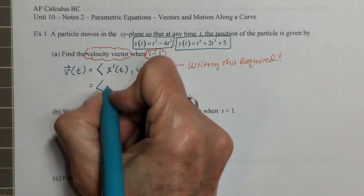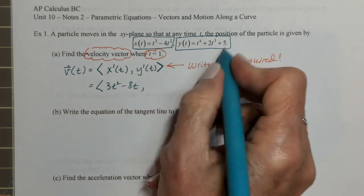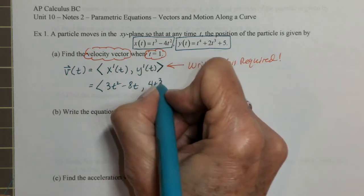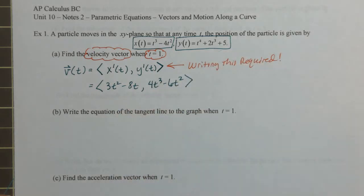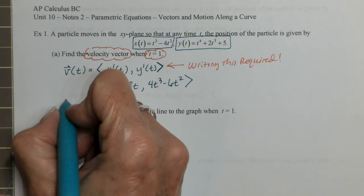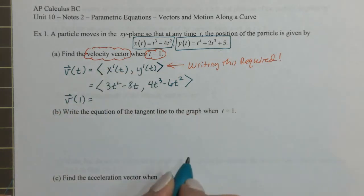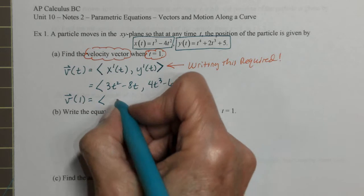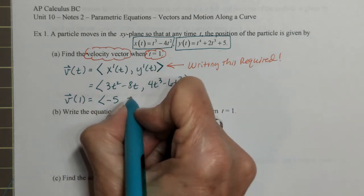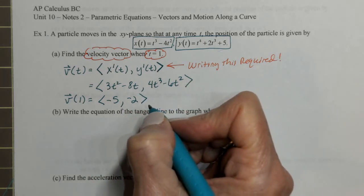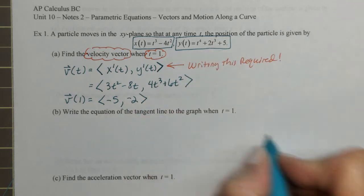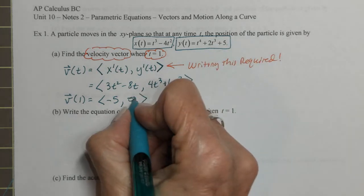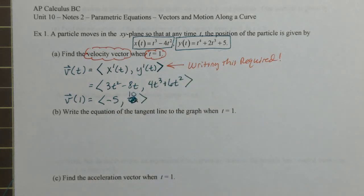So x prime of t is 3t squared minus 8t, and y prime of t — little power rule here — is 4t cubed minus 6t squared, and the derivative of 5 is 0. That's the velocity vector for any time t. Now I'm going to put in the time they asked for: t equals 1. The x coordinate will be 3 minus 8, which is negative 5. The y coordinate — I had a sign error — should be a positive, so that's 10. So at time 1, the velocity vector is ⟨-5, 10⟩.